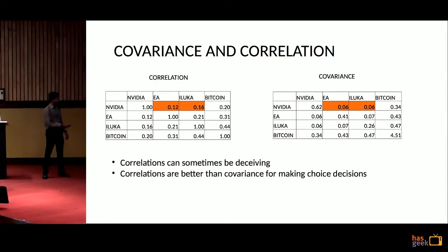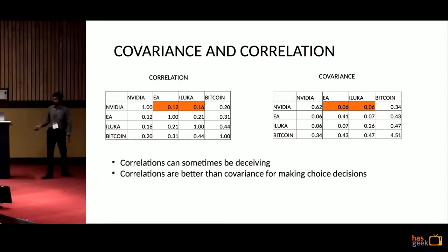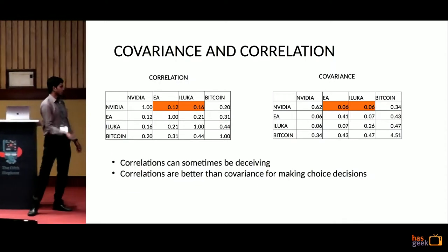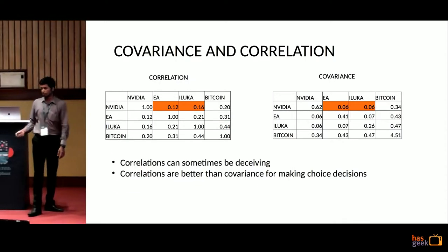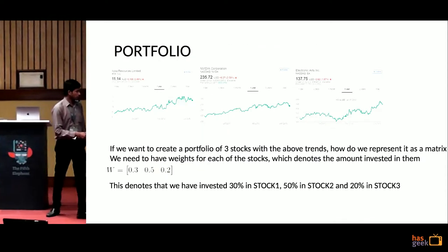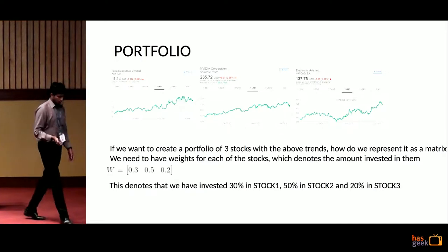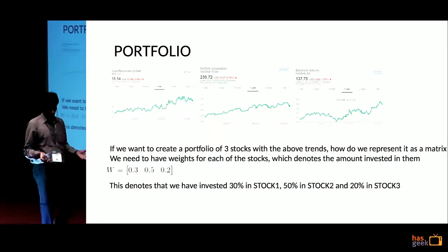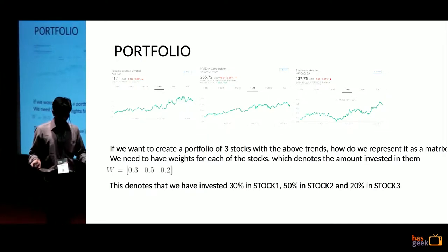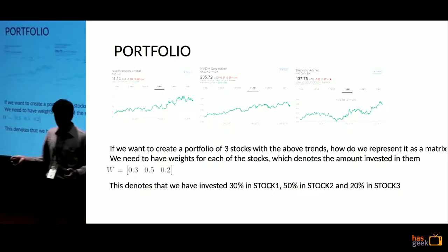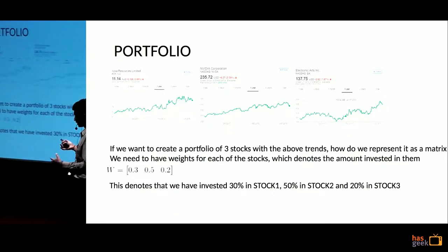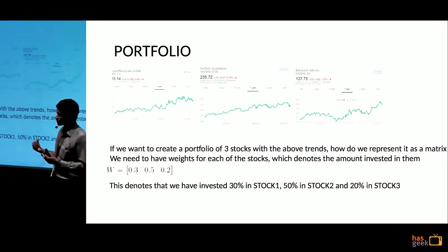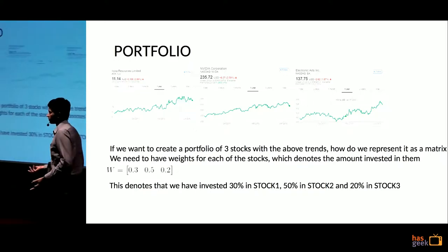Some takeaways: correlations can sometimes be deceiving — we already saw that. Correlations are better than covariance for making decisions. We have spoken about stocks and how we can analyze them. But what next? What we want is to earn money out of it.